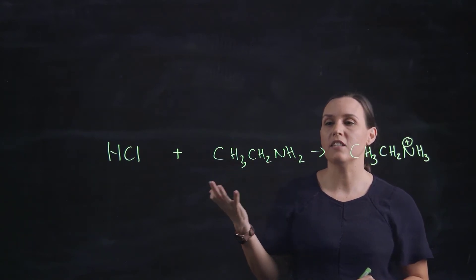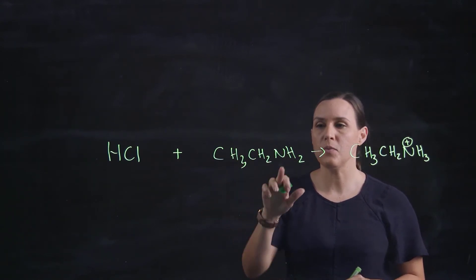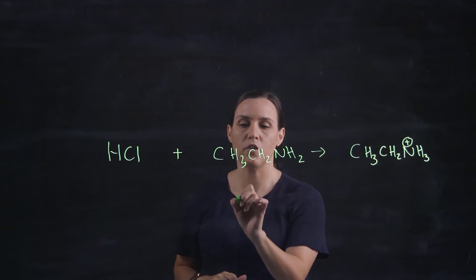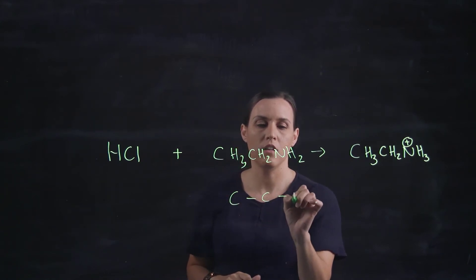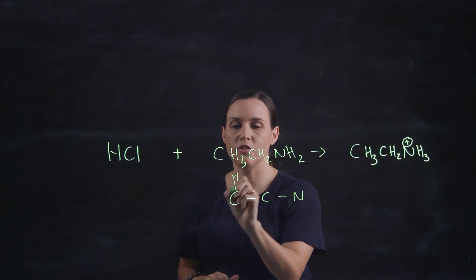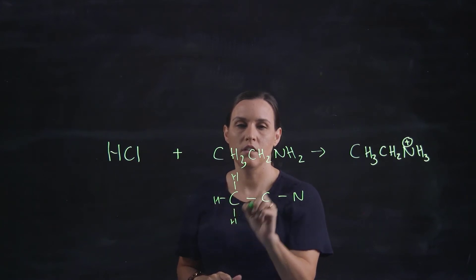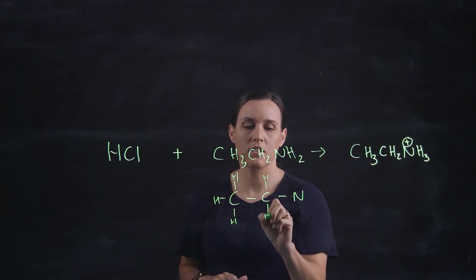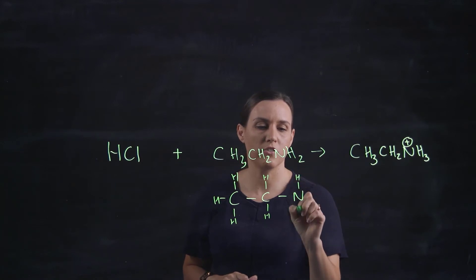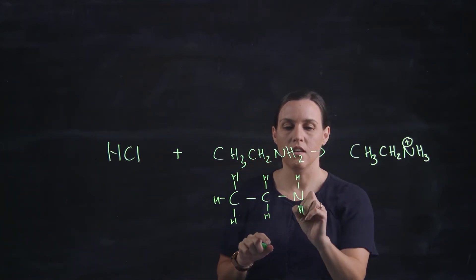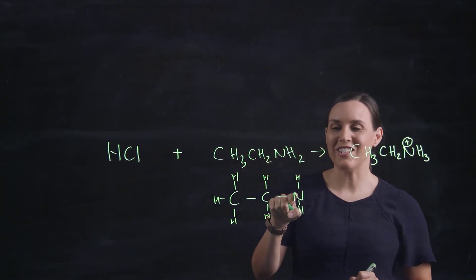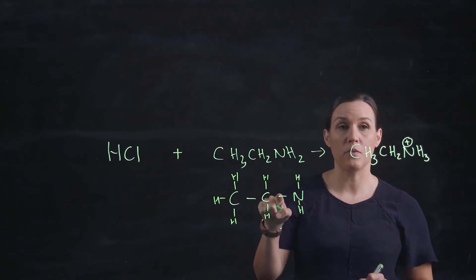Nitrogen normally likes to have three bonds coming from it. So if I draw this one out here we've got carbon, carbon, nitrogen and this one has our three hydrogens, two hydrogens and this one has two hydrogens. You can see with the bond in there nitrogen's got one, two, three bonds.